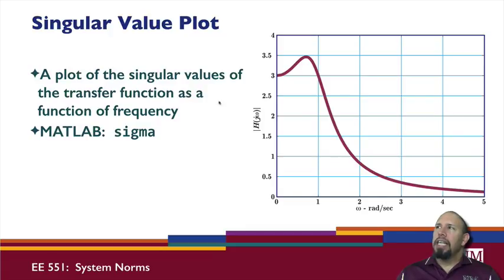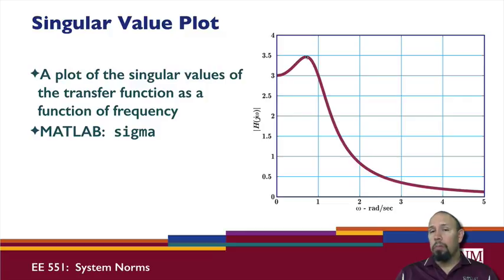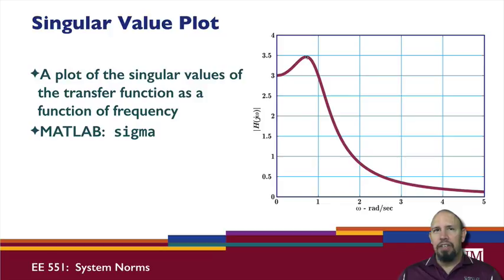Basically, if we were to plot the singular values of the transfer function as a function of frequency, in MATLAB you can use the command 'sigma' to do a singular value plot. It plots the singular values of a transfer function, and then you look for the peak magnitude over all frequencies — that is the H-infinity norm. There are other methods of computing the H-infinity norm, but in general it's a complicated thing to calculate. All of the methods we have basically provide bounds on the H-infinity norm, and we can tighten those bounds as tight as we want, but none gives us the exact value.